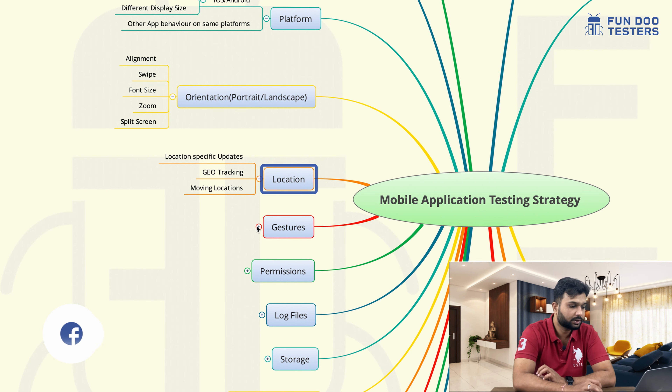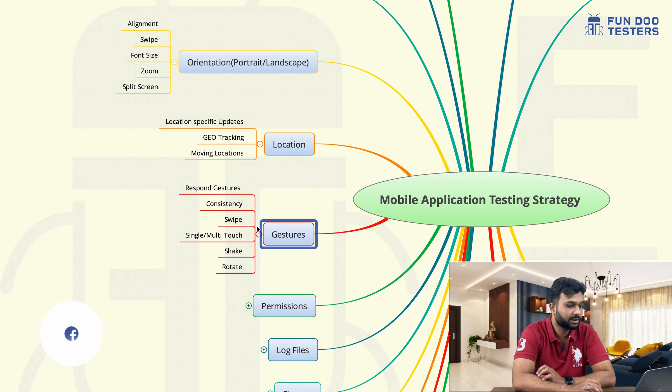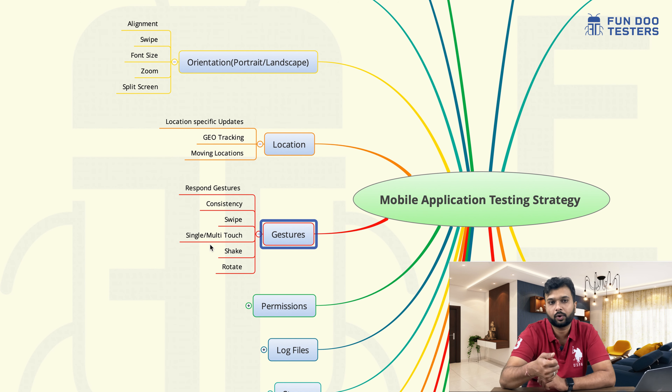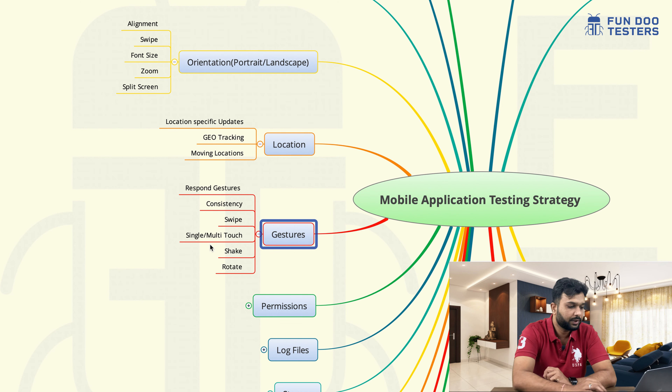Later on, gestures. Gestures include swipe, touch, single touch, and rotate. These all things we need to keep in our mind.